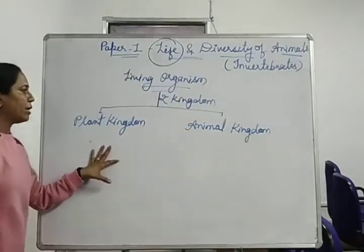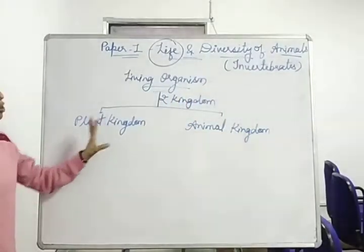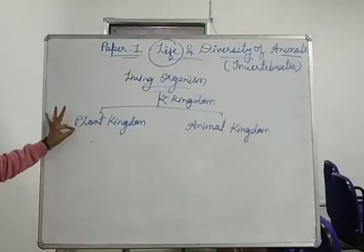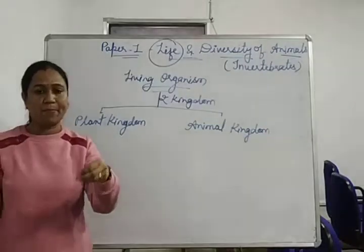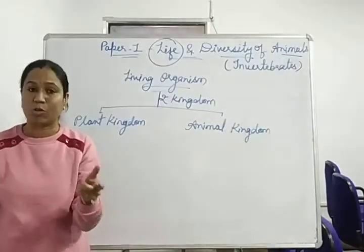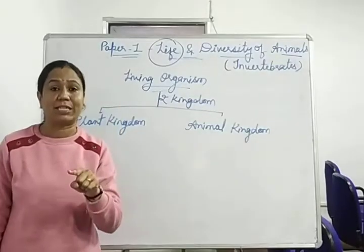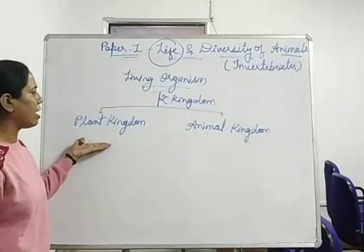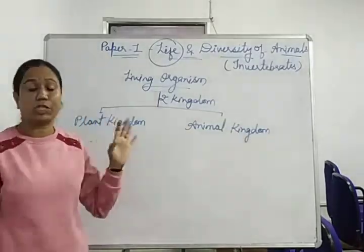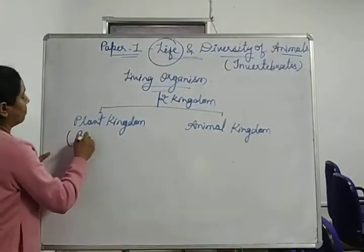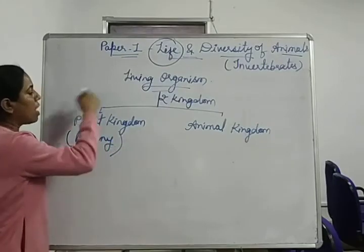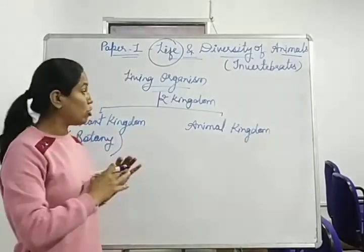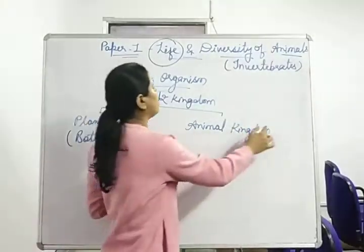The plant kingdom has classified plants — which are green in color, which is called chlorophyll, and which have a cell wall. The study of plants is known as botany. So this whole portion is the plant kingdom, which you have to study in botany, so we will concentrate on the animal kingdom.